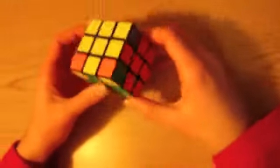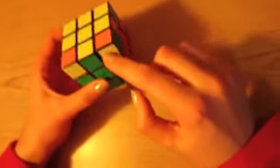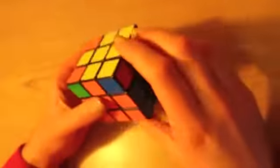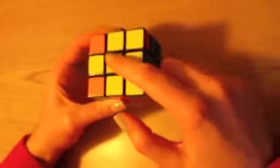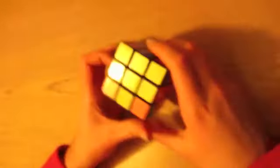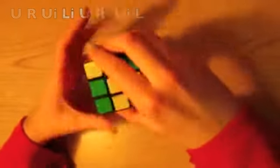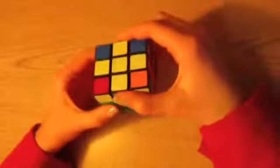The next step in solving the top layer is to position all of the k sub x, y, z's into their correct corners next to their adjacent colors. In this case, k sub yellow, blue, red is not in the right place. Using this algorithm, the k sub x, y, z's should go to their correct positions. However, you may need to do it a second time for this to work.